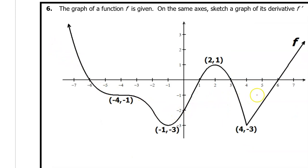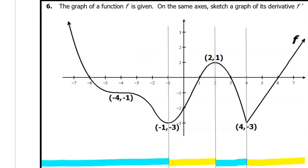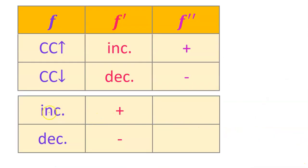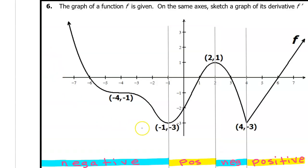For problem number six, here is the graph of function f, and we are to sketch a graph of f prime. The first step is to divide function f into intervals of increasing and decreasing. Function f is decreasing in the blue intervals and increasing in the yellow intervals. Wherever function f is increasing, f prime will be positive; if f is decreasing, f prime will be negative. We should also note locations where there is a horizontal tangent line — the most obvious ones are here and here, but also there is a point of inflection right here. This also counts as a horizontal tangent line, so at these three x values the slope is zero. When we graph f prime, it should have a value of zero at each of these points.